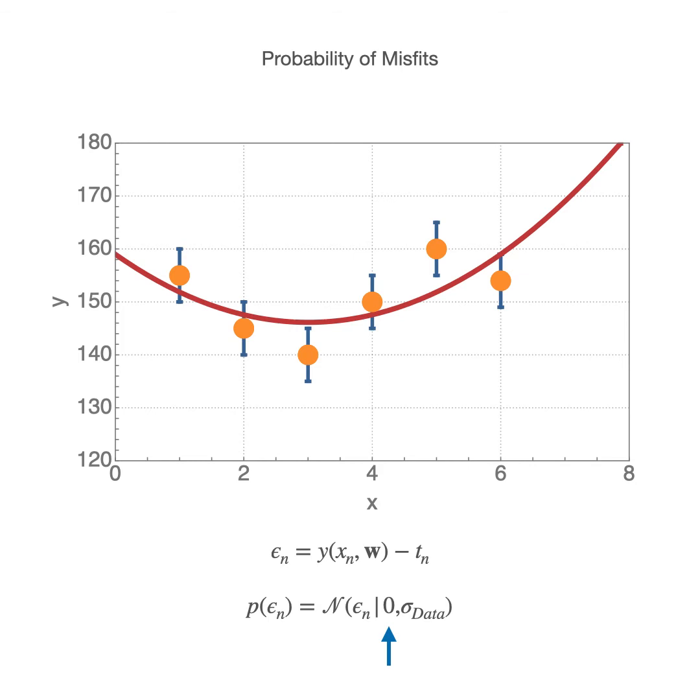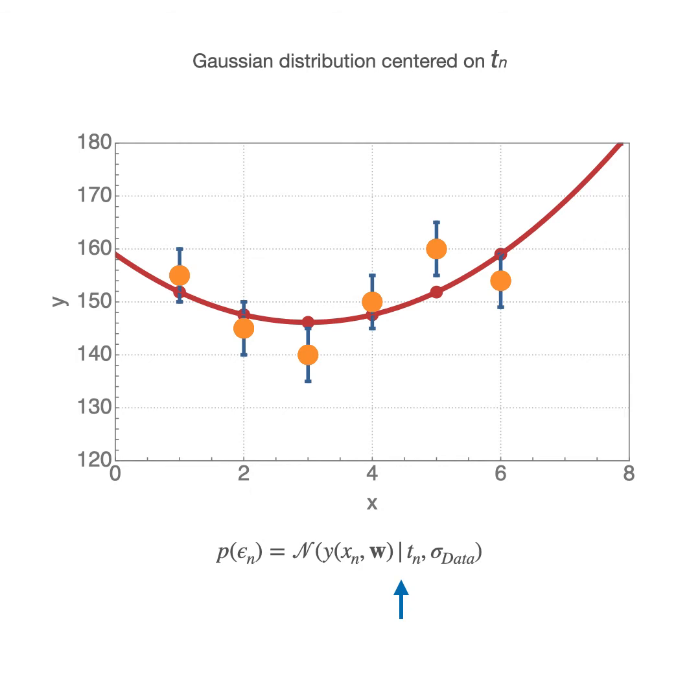We assume a Gaussian probability distribution with a standard deviation equal to 5 which is the observed uncertainty in the data. Substituting epsilon in the Gaussian expression gives this equation. This equation expresses a Gaussian distribution. It is centered on top of the orange target points.